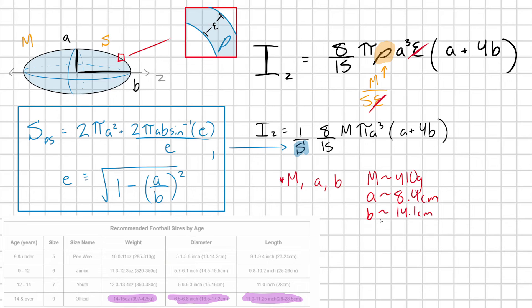I've already gone through and plugged these values in, so you can either plug them in yourself or take my word for it. We're going to find that the moment of inertia of a football is approximately 0.00202 kilogram meters squared.